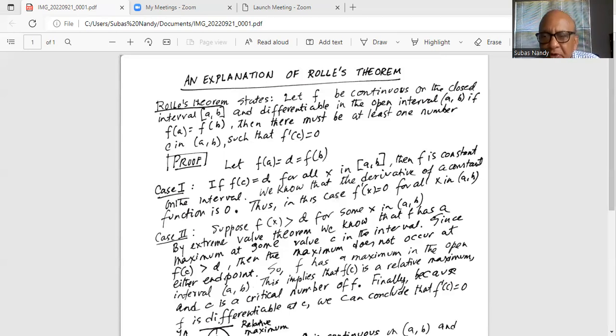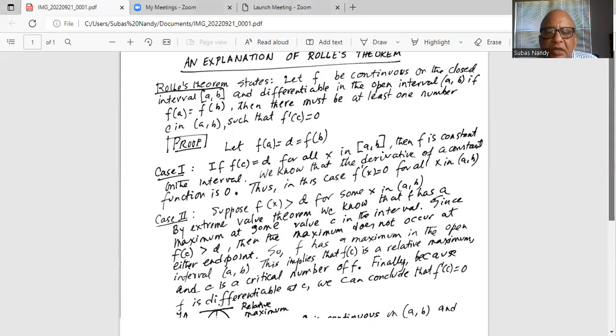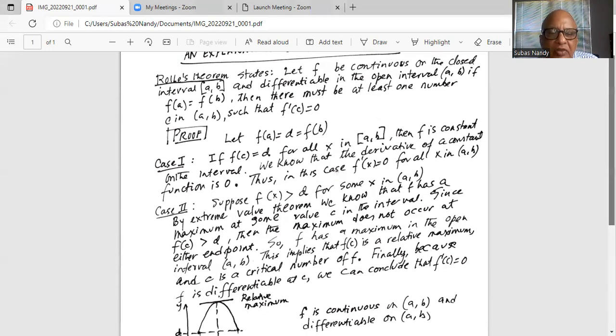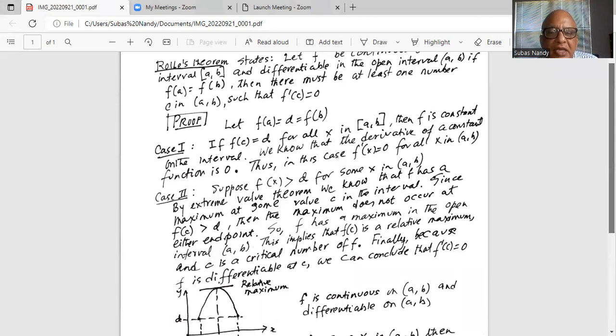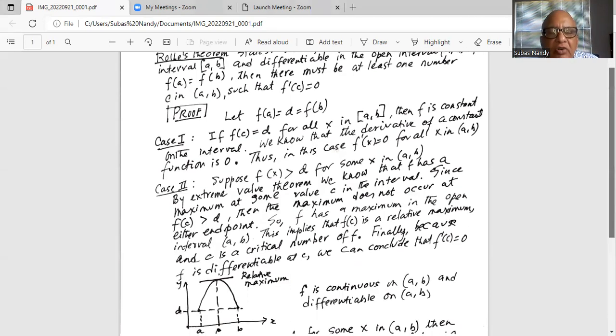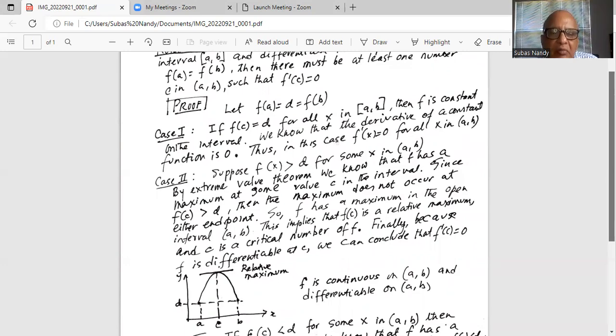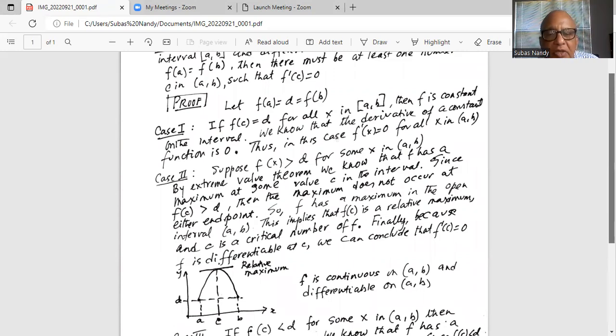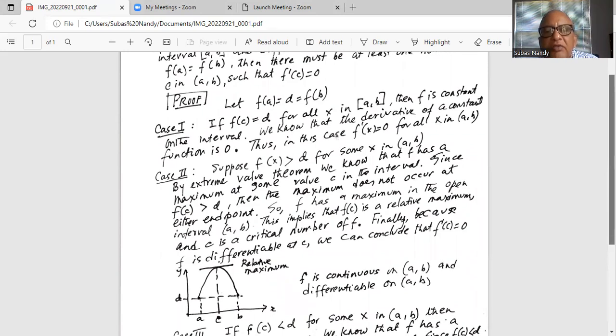Case 2: Suppose f(x) is greater than d for some x in (a, b). By extreme value theorem, we know that f has a maximum at some value c in the interval. Since f(c) is greater than d, remember d is the value of the function at f(a) and f(b), at x equals a and x equals b. Since f(c) is greater than d, then the maximum does not occur at either endpoint as is shown in the diagram below. So f has a maximum in the open interval (a, b).